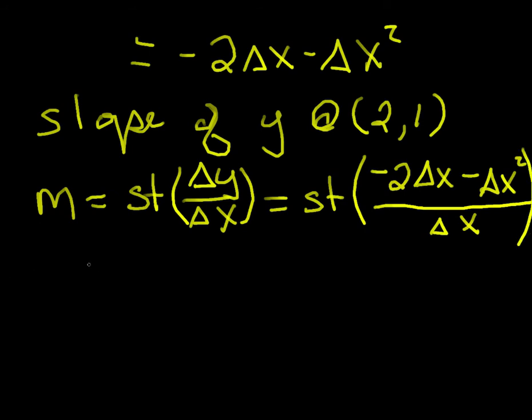So slope of y at the point 2, 1 will be given by slope is equal to the standard part of delta y divided by delta x, which we now know is the standard part of negative 2 delta x minus delta x squared. That's the change in y part, and delta x is our change in x. And this is equal, we can cancel out, we've got delta x everywhere, so this is equal to the standard part of negative 2 minus delta x. And since delta x is an infinitesimal and negative 2 is a real number, the standard part of this is just simply negative 2.